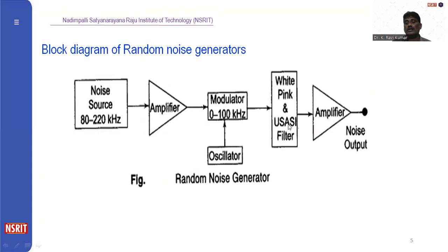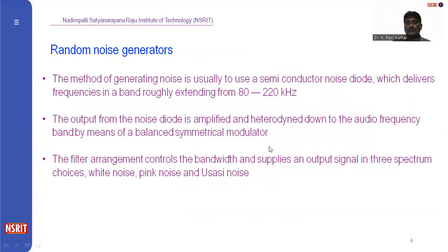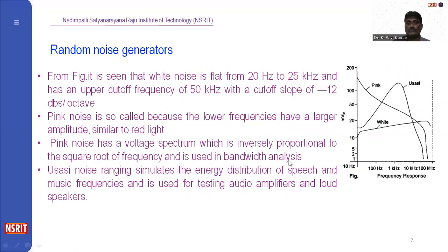The filter arrangement controls the bandwidth and supplies an output signal in three spectrum choices: white noise spectrum, pink noise spectrum, and USASI noise spectrum. On the output spectrum, we obtain these three noise signals — white noise, pink noise, and USASI noise.